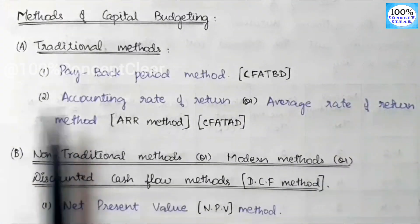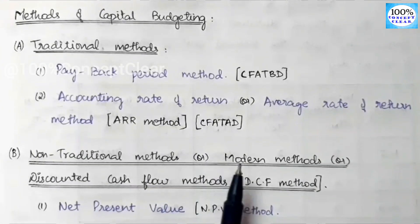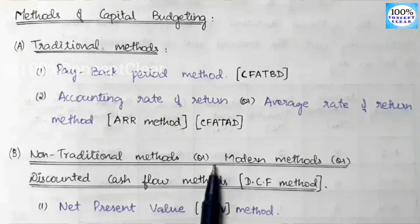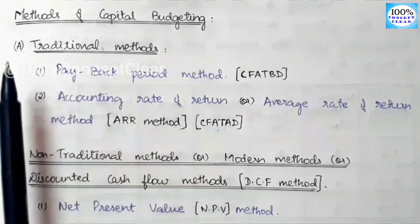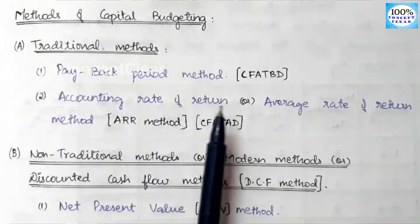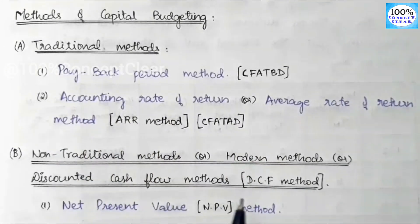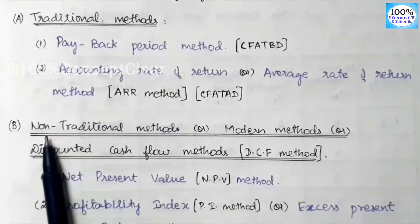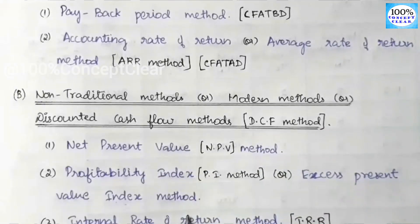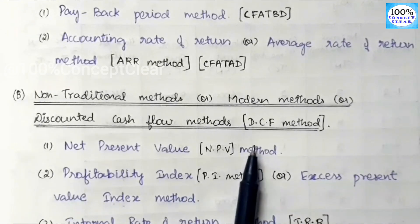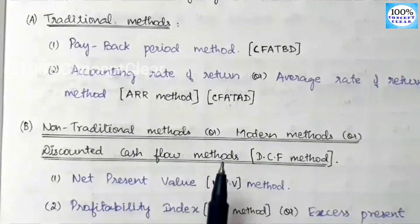We are looking at the traditional method and non-traditional method, and there is a major difference between the two. That difference is the concept of time value of money. In the traditional method, we ignore the concept of time value of money. In the non-traditional method, or modern method, or discounted cash flow method, we consider the time value of money. That is the major difference between the two methods.